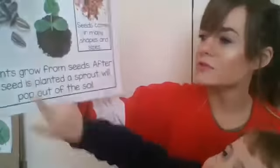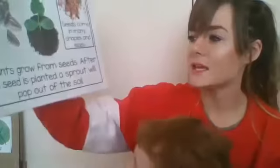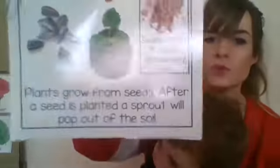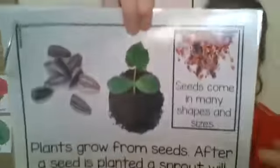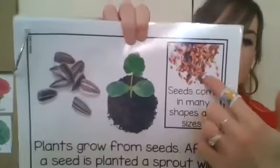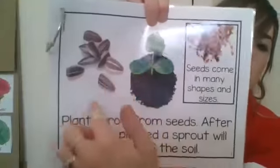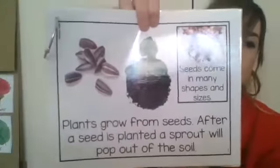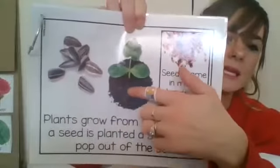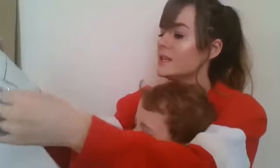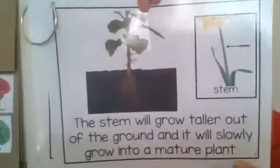Plants grow from seeds. After a seed is planted, a sprout will pop out of the soil. Seeds come in many shapes and sizes. Sometimes we see seeds that are really small, like these over here, or sometimes they're really big like sunflower seeds. And when we put the seed in the soil, a little sprout will start to come out.